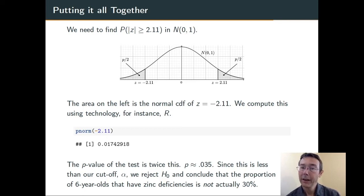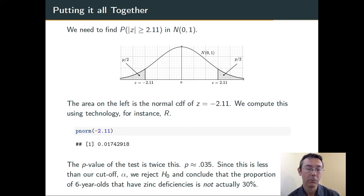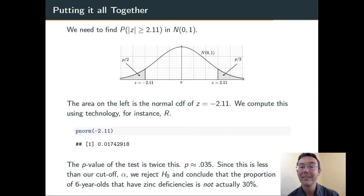The cutoff alpha that we had chosen, the significance level, was 0.05. This p-value is less, so we're going to reject the null hypothesis and conclude that the commentator's claim is likely false. The proportion of 6-year-olds in the U.S. that have zinc deficiencies is not actually 30%.